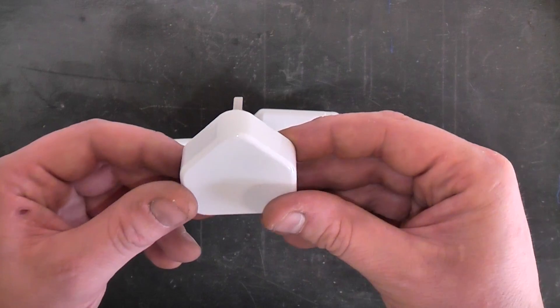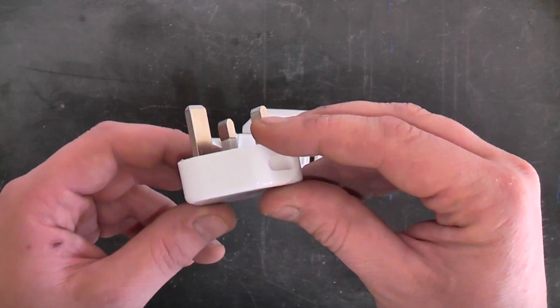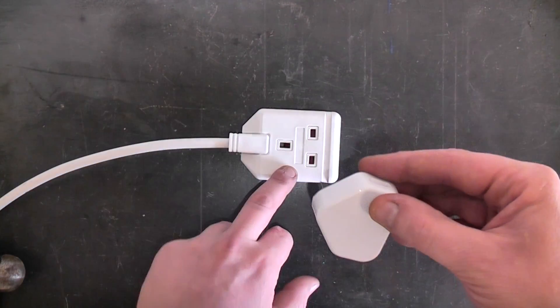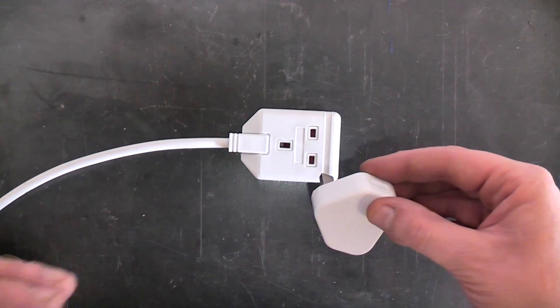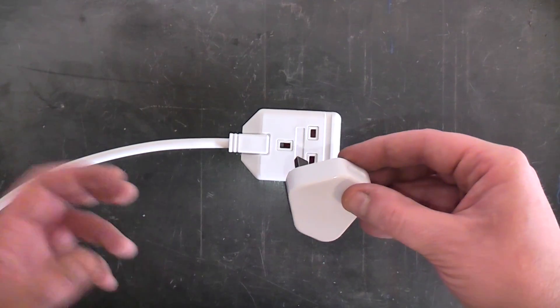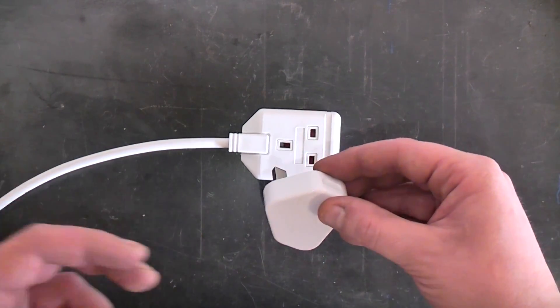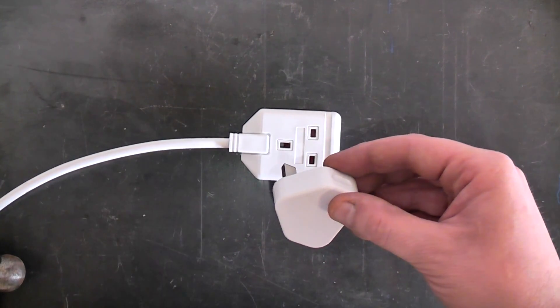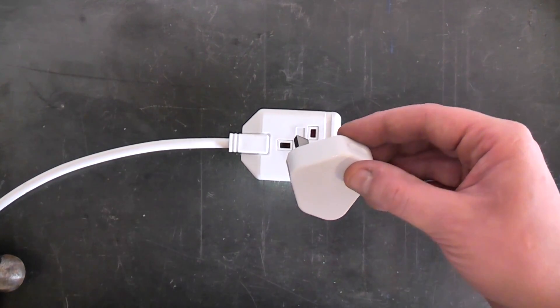Now this isn't something you should try and repeat, but what I'm going to do is plug it into this extension cord socket, a trailing socket. Now technically if it was a normal trailing socket with a normal 13 amp plug on it, you would have a 13 amp fuse on the end of the lead.